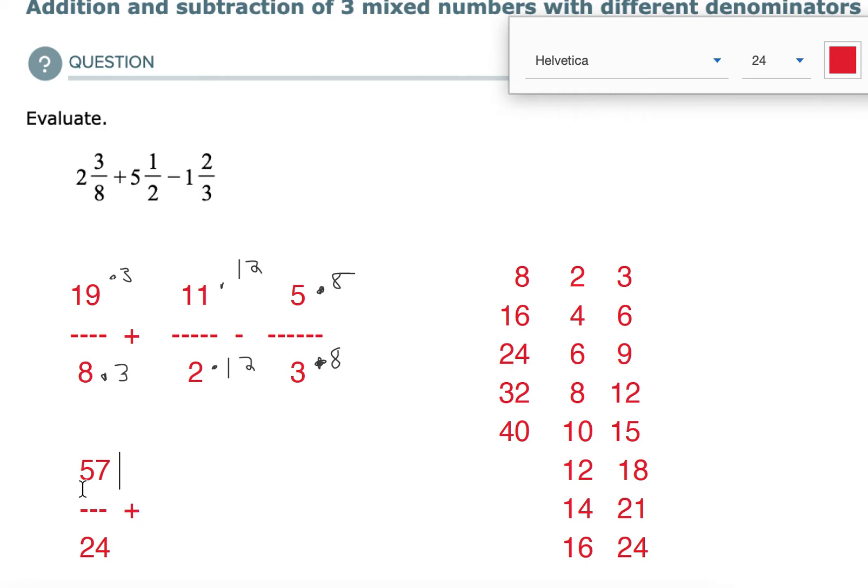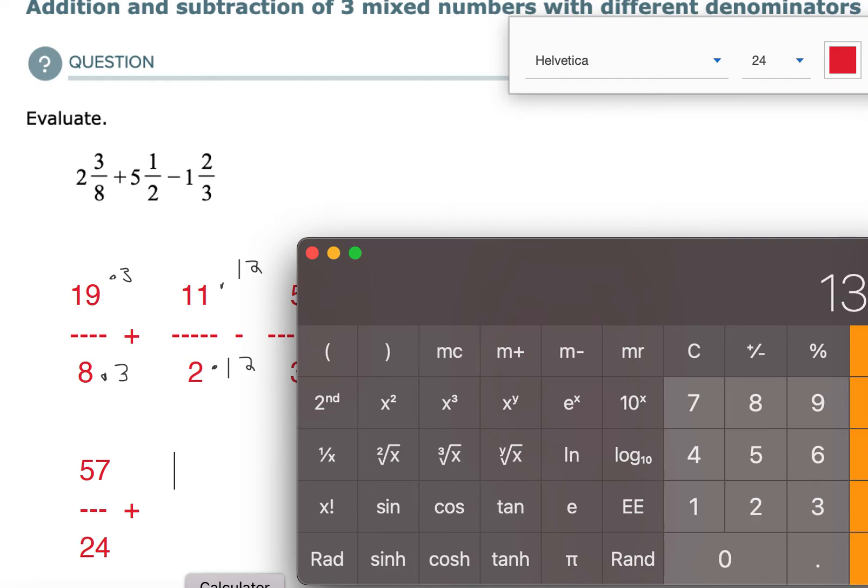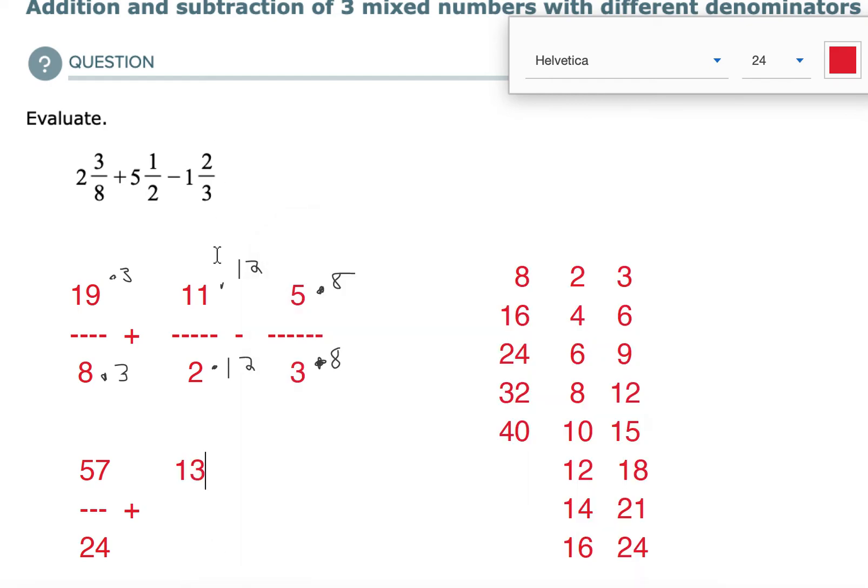19 times 3 is 57. So this fraction is now 57 over 24. And then over here we have 11 times 12. Let's see, that's 132 with my calculator. And again, that's over 24. And then we got 40. 8 times 5 makes 40. And then that's 24 on the bottom there too.